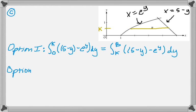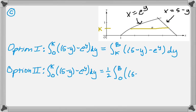And the other option would be to say that the integral from 0 to k, so that bottom half of the region, equals half of the entire region. So 0 to B. And either of those gets us the answer.